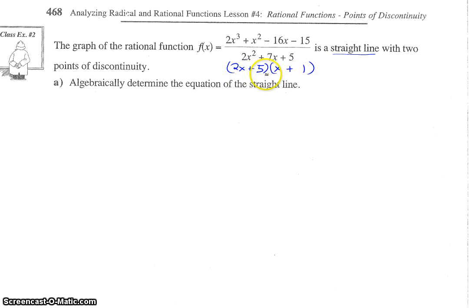Okay, so we should have gotten 2x plus 5 and x plus 1 as our two factors. If you're having trouble factoring that, please go back and watch the videos on factoring in one of the first or second unit, I think.